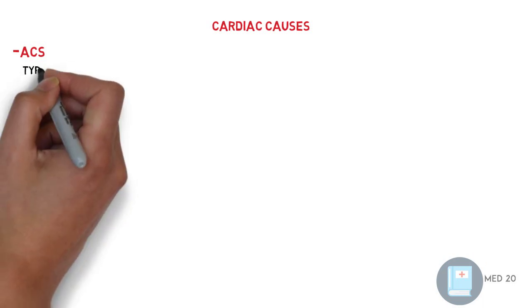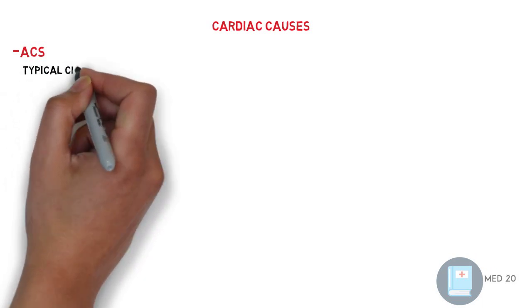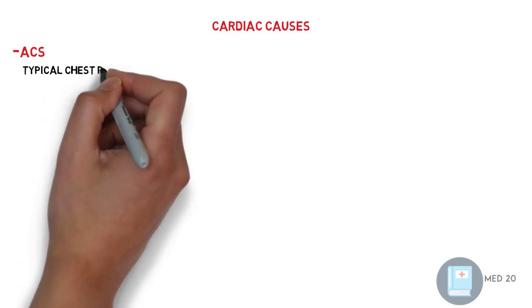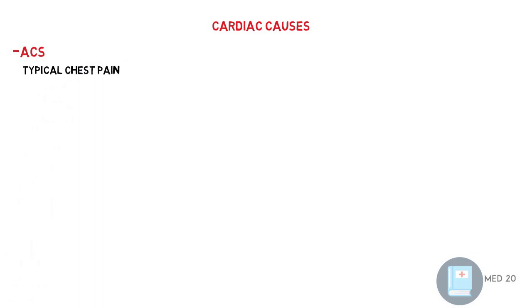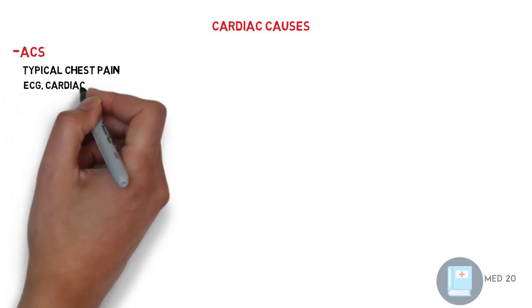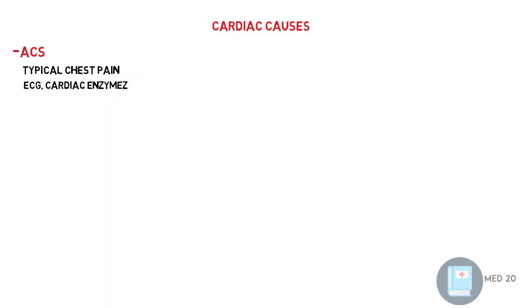Acute coronary syndrome. Most characteristic is typical chest pain. Typical chest pain is chest pain that radiates to the left shoulder — all of these are characteristic of acute coronary syndrome. The most important typical chest pain consists of three things: one, retrosternal chest pain; two, aggravated by activity or exertion; three, relieved by rest or nitroglycerin. And characteristic ECG changes — either ST depression, ST elevation, or T-wave inversion. And third, elevation of cardiac enzymes.